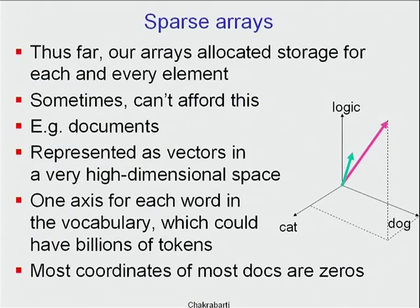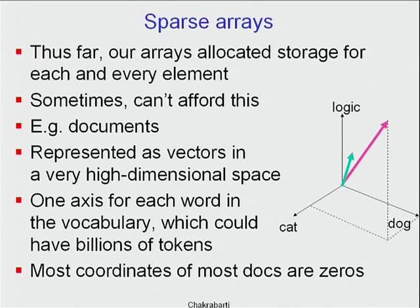Similarly, in a search engine, documents are represented as vectors in a very high-dimensional space. There is an axis for every token found on the web — cat, dog, logic, and millions of other tokens, each having a dimension in this Euclidean space. The number of distinct tokens, if you crawl the entire web, scales roughly with the number of documents, because unique email addresses and PGP public keys are all tokens. So the number of distinct tokens is in the billions.